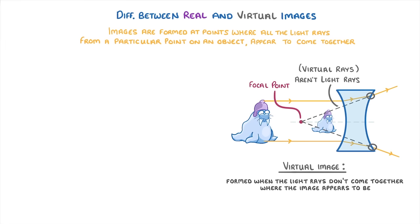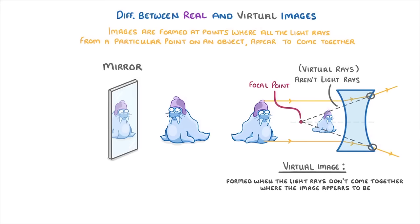The most common example of a virtual image is whenever you look in the mirror. The images you see aren't real images, because although the images appear to be behind the mirror, there can't really be any rays behind the mirror, because it's a solid object that light can't pass through. So they're only virtual rays forming a virtual image.